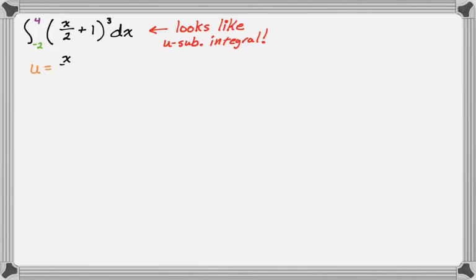So first, let's pick u. So it's the thing inside parentheses usually. And from here, I know that du is one half dx. And then I like to rewrite it so it's two du is equal to dx.